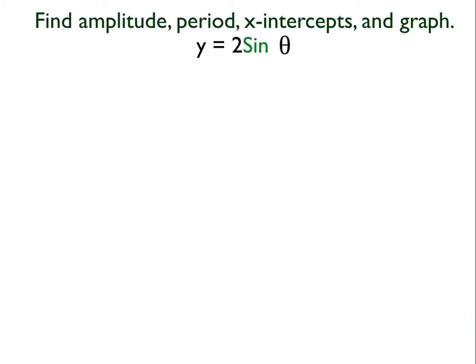So let's do an example here. Find the amplitude, the period, and the x-intercepts, and then I want to graph. So to find my amplitude, I just look at my equation, my function. And in the a position, I have a 2. And in the b position, I don't have anything there, but it's just an assumed 1. So b equals 1. So I have my amplitude, I have my period.